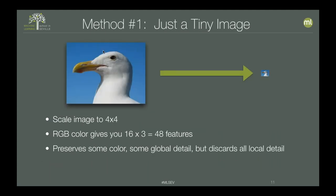As the most basic example of feature extraction, consider scaling the image down to something very small — say 4×4. With three channels per pixel, 4×4 is 16 pixels, giving you 48 features. You're preserving some color information, a little global spatial information, and some global detail, but you discard all the local details. You could generalize this to include not just the mean values but also the variance inside those super-pixels. That gives you a little extra information, but of course it increases the dimensionality — there are always trade-offs.